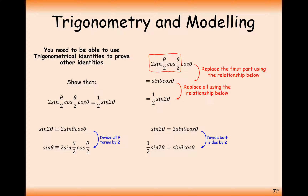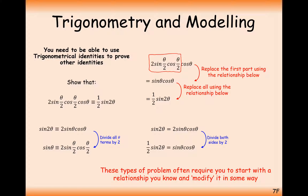We're going to move on to a series of more trig identities to see different methods we can use to simplify them. These types of problems often require you to start with a relationship you know and modify it in some way — for example, halving or doubling all of the angles inside the identity.